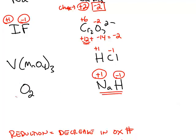In diatomic oxygen, this is not a compound — it's just an element. Each oxygen has to have an oxidation number of 0, not negative 2, because if each had a negative 2, the total charge on oxygen would be negative 4, but this chemical has a zero charge.